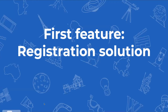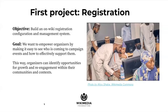Now let's talk about our first project, which is registration. Our objective is to build an on-wiki registration configuration and management system — a way that organizers can create a registration form and manage the registration process. Our goal is to empower organizers by making it easy to see who is coming to campaign events and how to effectively support them, so organizers can identify opportunities for growth and re-engagement within their communities.